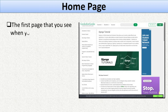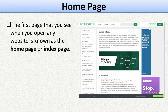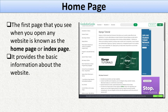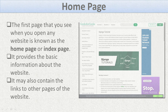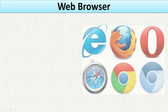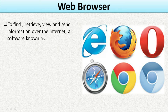The home page is the first page you see when you open any website — also known as the index page. It provides basic information about the website and may also contain links to other pages on the website. Whenever you visit any website, the first page that opens is the home page, and all the other related web pages are linked from this home page.